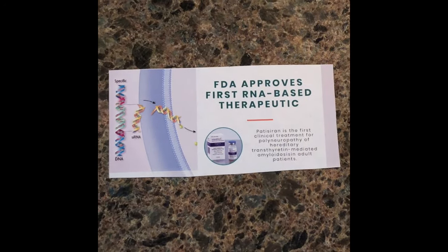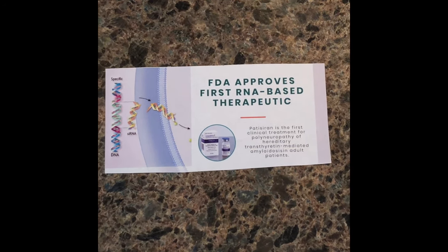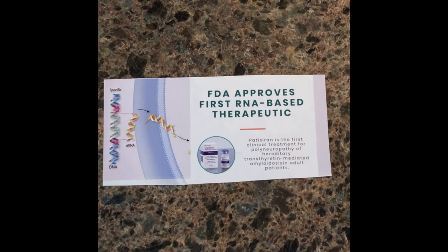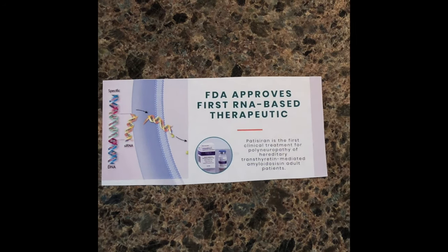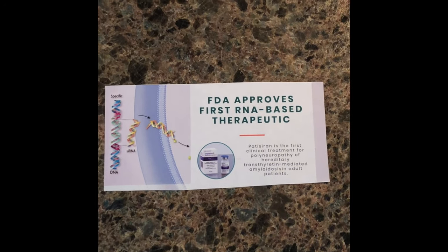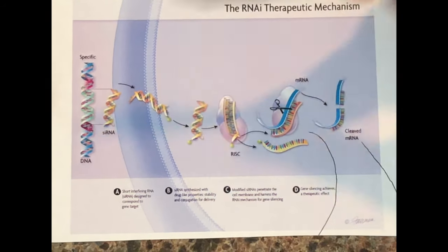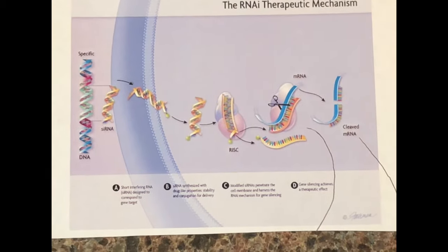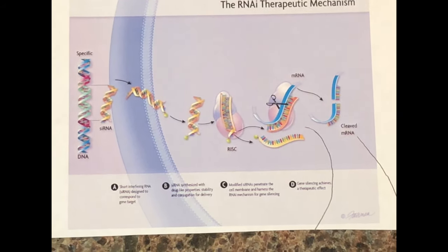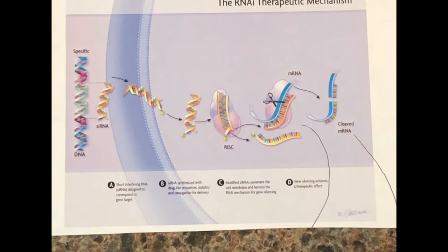This is an RNA-based therapeutic which is used to treat transthyretin-mediated amyloidosis in adult patients. Amyloidosis is characterized by the deposit of abnormal protein called amyloid in multiple organs of the body where it should not be. Here the siRNA is designed to correspond to a specific gene target, but the siRNA is synthesized with drug-like properties which provide stability and conjugation for delivery.